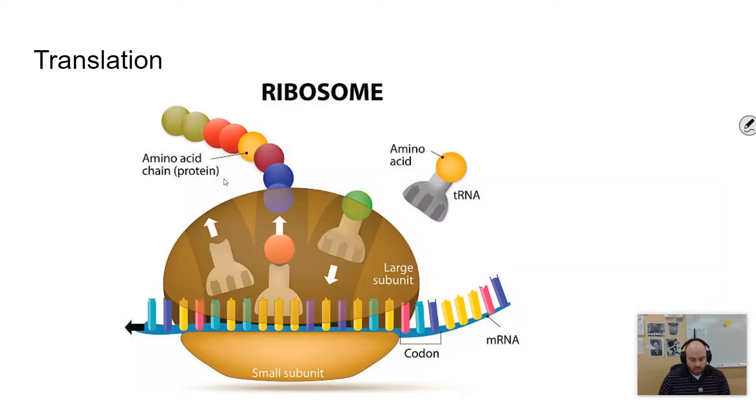Translation occurs on the ribosome. Ribosomes can be found in multiple places in a eukaryotic cell. In a prokaryotic cell, they're found just inside the cell. There's no nucleus, there's not really separate areas of the cell. Whereas in a eukaryotic cell, the cell is highly compartmentalized, so you have some that are just floating around freely in the cytoplasm. You have some that are located on the rough ER.